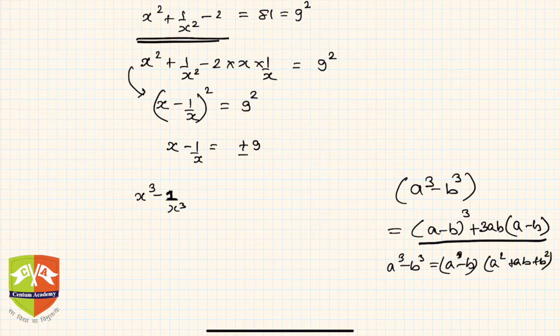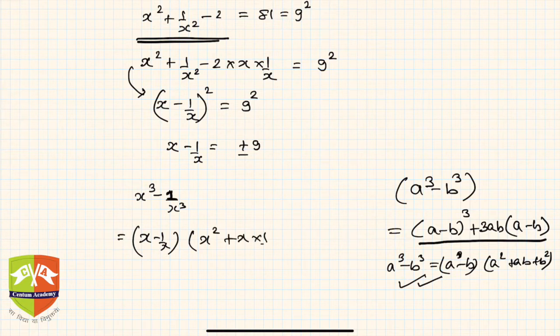You can use either of the two. So let's say x³ - 1/x³ will be equal to (x - 1/x) times (x² + x × 1/x + 1/x²). Now x - 1/x is given.